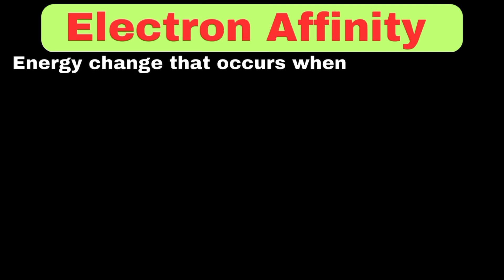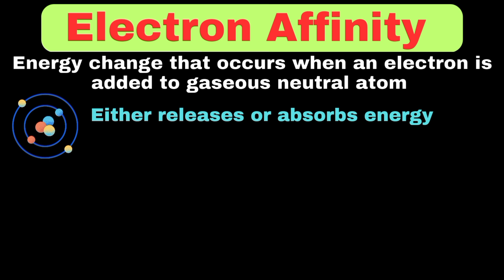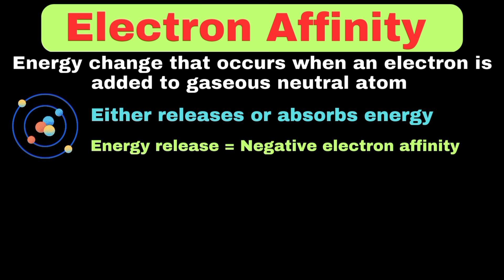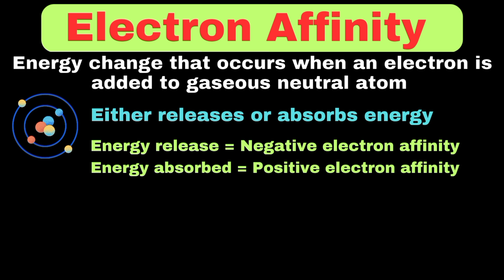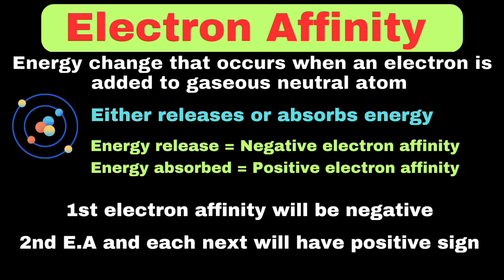Now we will move towards electron affinity. It can be defined as the energy change that occurs when an electron is added to a neutral gaseous atom in its ground state. When an atom accepts an electron, it either releases energy or absorbs energy. If energy is released, we call it a negative electron affinity; and if energy is absorbed, we call it a positive electron affinity. Keep in mind, whenever the first electron is added to a neutral atom, energy will be released, but when an electron is added to a negatively charged ion, energy will be absorbed. This means that first electron affinity will have a negative sign, and each subsequent value will have a positive sign.